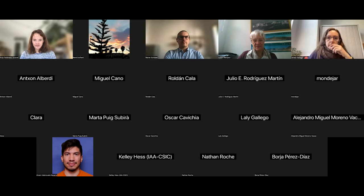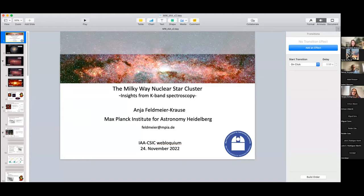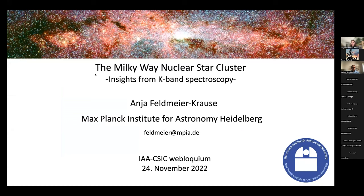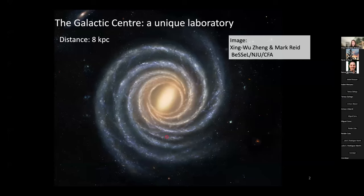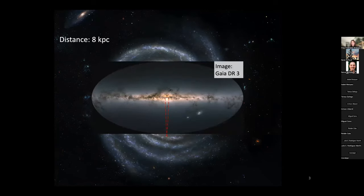Thank you very much for the nice introduction and also for inviting me to present my work. I will talk about the Milky Way nuclear star cluster with a focus on what we can learn from K-band spectroscopy. I would like to show you this beautiful illustration of our galaxy, the Milky Way. This is where we are located in the local arm of this beautiful spiral galaxy. There are several spiral arms, and in the center we have a bar. To observe the galactic center, we have to look through all of these spiral arms and the bar. The galactic center is at a distance of eight kiloparsecs. We see it edge-on because we are living inside the Milky Way.